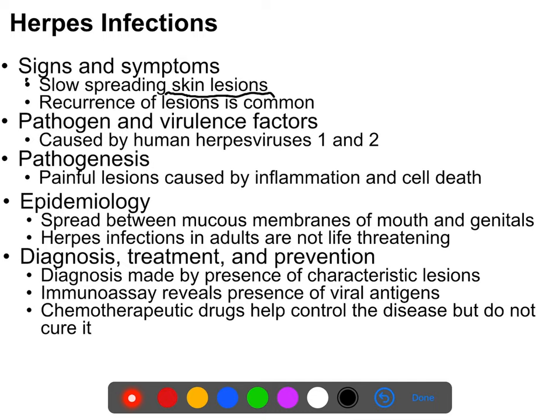Herpes also infects the genitalia — the glans of the penis, the foreskin, and the labia surrounding the vagina are mucous membranes or mucous membrane-adjacent enough to get infected. The virus then moves into the local nerves, travels up the nerves, and hides inside the ganglia, where it can reactivate multiple times. It's a classic latent virus.